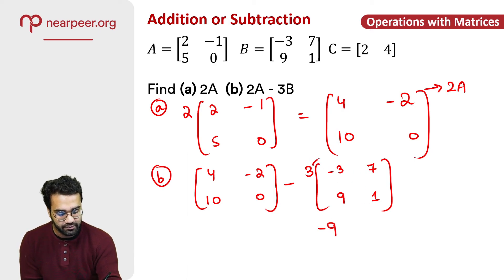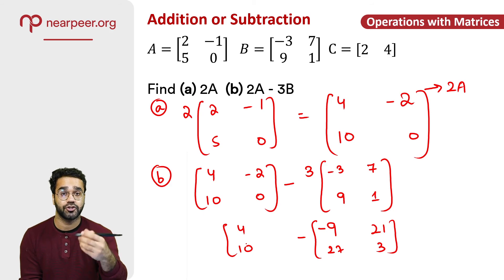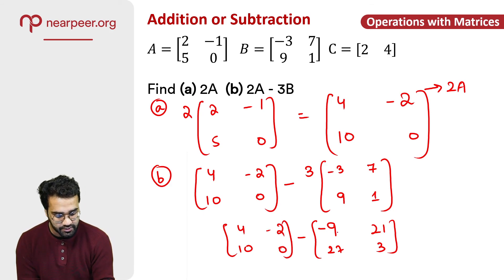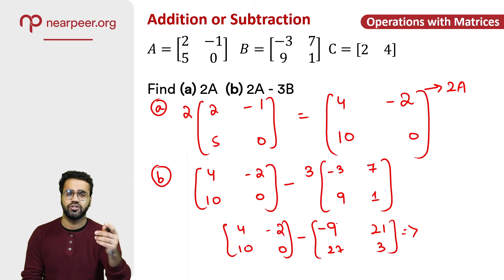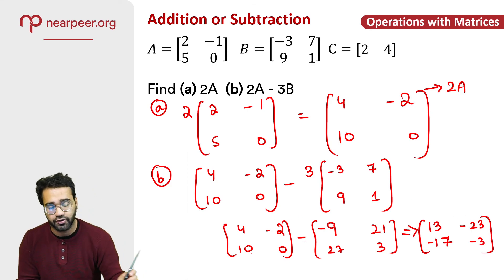So this becomes minus 9. 3 times 7 is 21. Then multiply 3 with 9. 3 nines are 27. And then multiply 3 with this 1 which would be 3. So now I've multiplied and now I have to perform my operation which is subtraction. Minus 2 and 0. So this becomes 4 minus minus 9 which is simply 4 plus 9, and that gives me 13. Minus 2 minus 21 that gives me minus 23. 10 minus 27 gives me minus 17. And 0 minus 3 gives me minus 3. So that is your answer for part B.